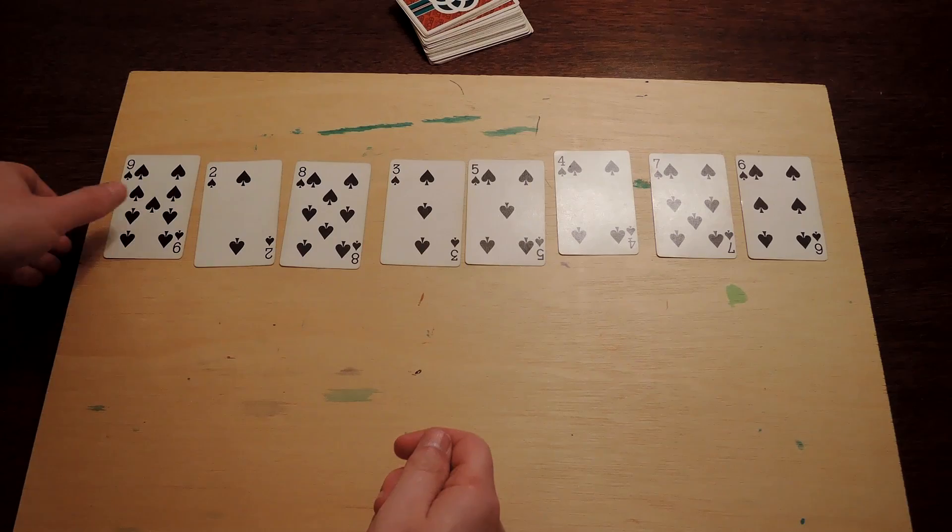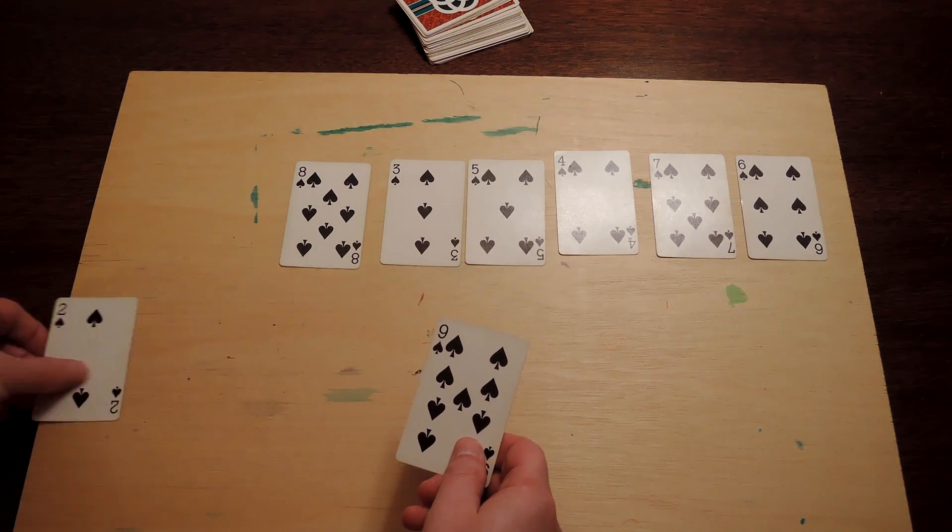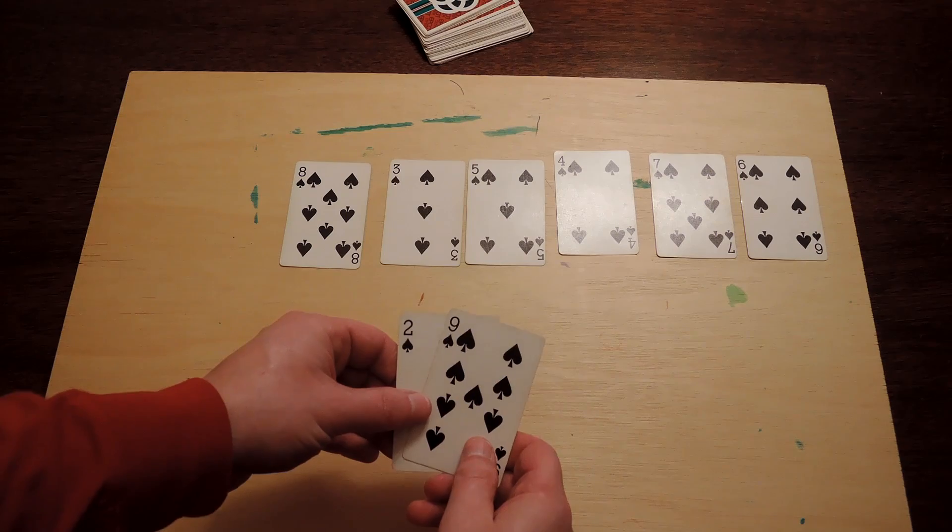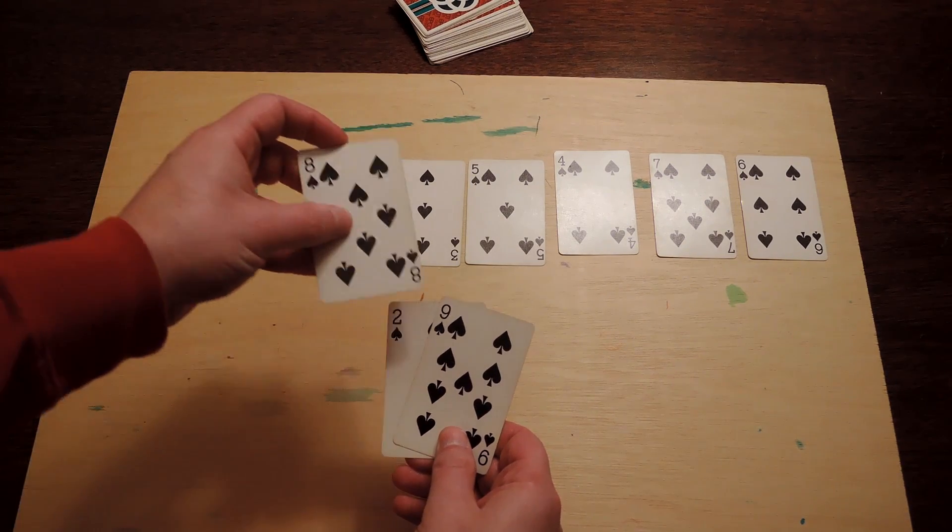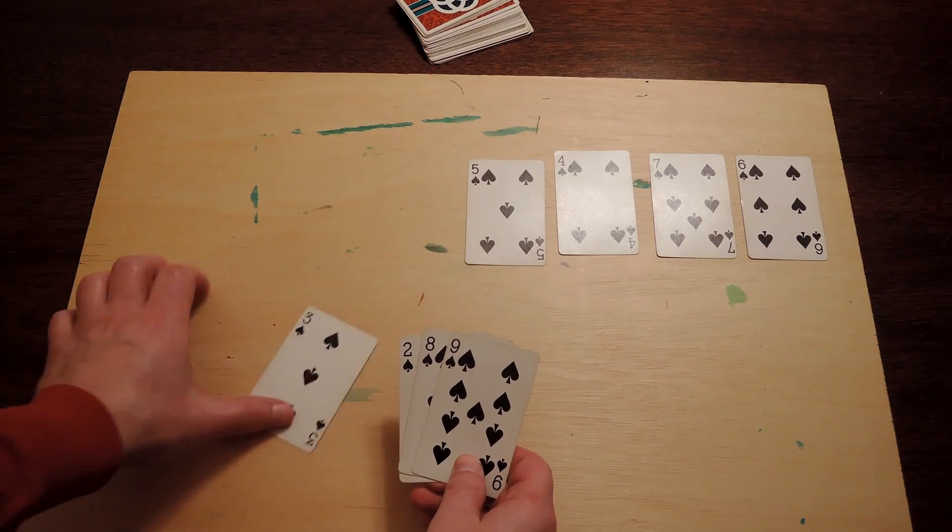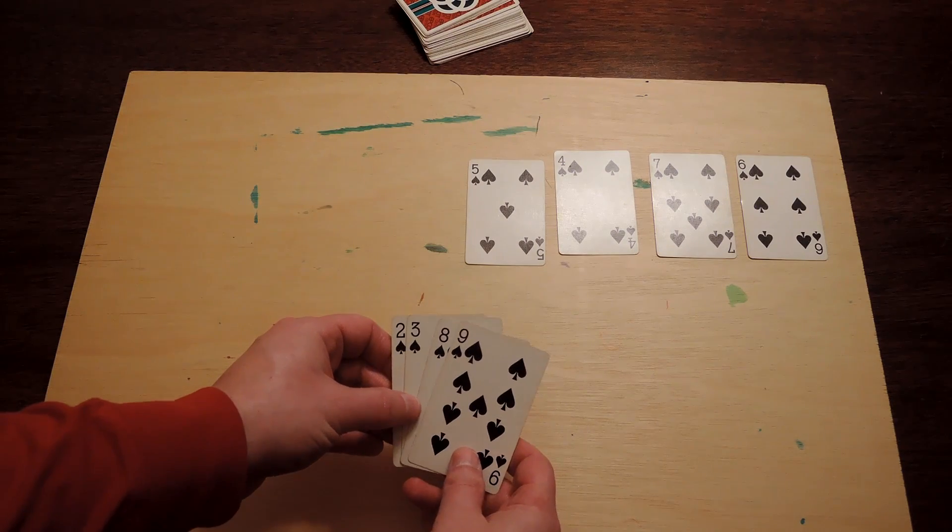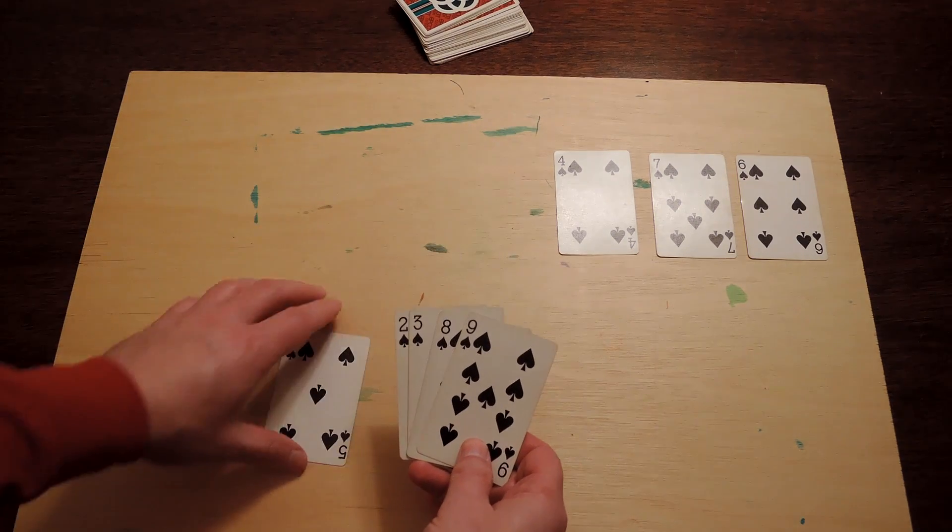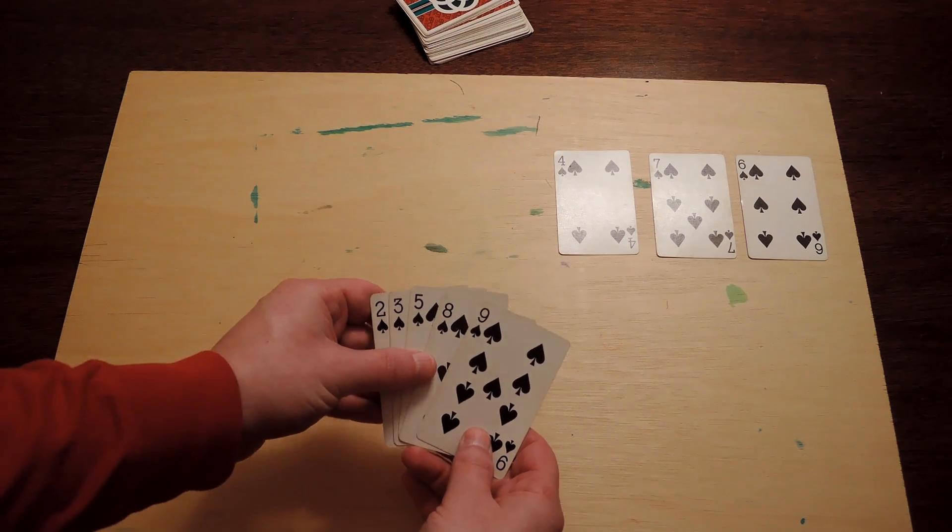Now, the other common method is to pick up the cards one by one in the order that they are lying on the table and stick each card in its correct position among the picked up cards, sliding other cards out of the way to make room as needed. Maybe that's what you did. Again, most people will use one of these two methods. Now, if you did something entirely different, feel free to drop a comment about it below.